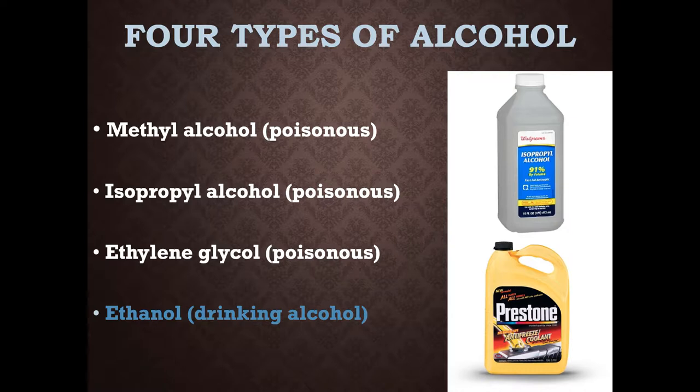There are four different types of alcohol, and only one of which you are able to consume. The first is methyl alcohol — methanol — which is a highly poisonous substance. Just a small amount will cause you to go blind, and 80 to 150 milliliters — about 5.07 ounces, roughly 3.3 shots — will kill you. Methanol is called wood alcohol because it is a byproduct of the destructive distillation of wood. When you drink methanol, your body metabolizes it into formaldehyde, which is toxic to the central nervous system.